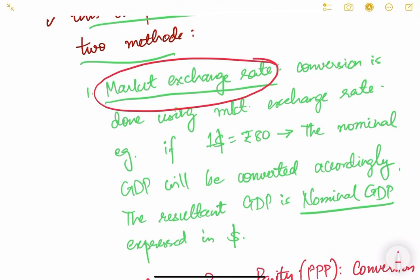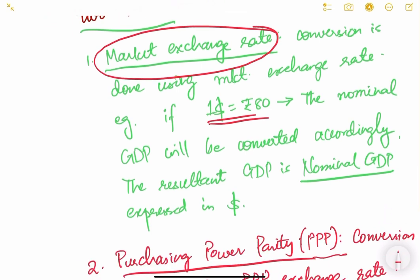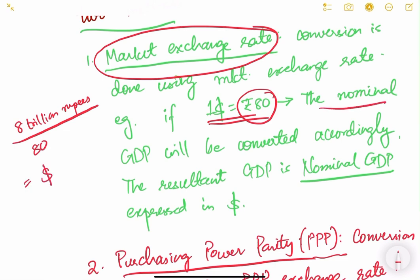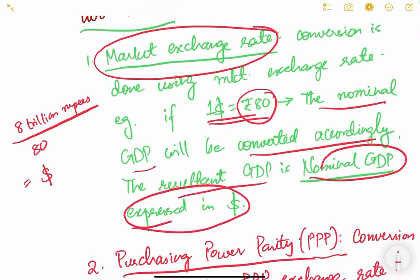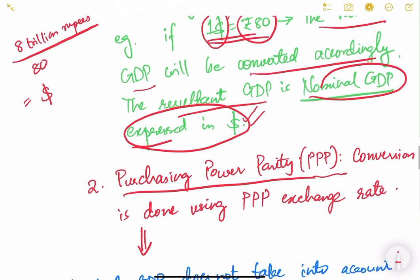Using the market exchange rate method: if one dollar equals 80 rupees and India's GDP is 8 trillion rupees, we divide by 80 to get the GDP in dollar terms. The resulting figure is the nominal GDP expressed in dollars. This is how nominal GDP is calculated when comparing across countries.